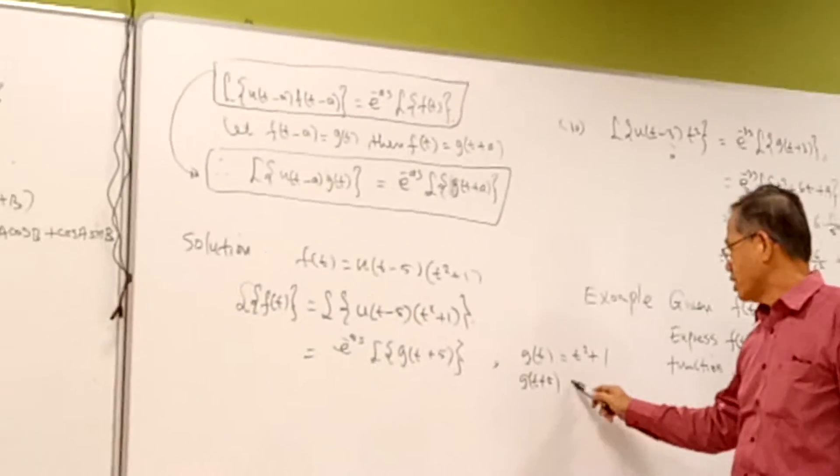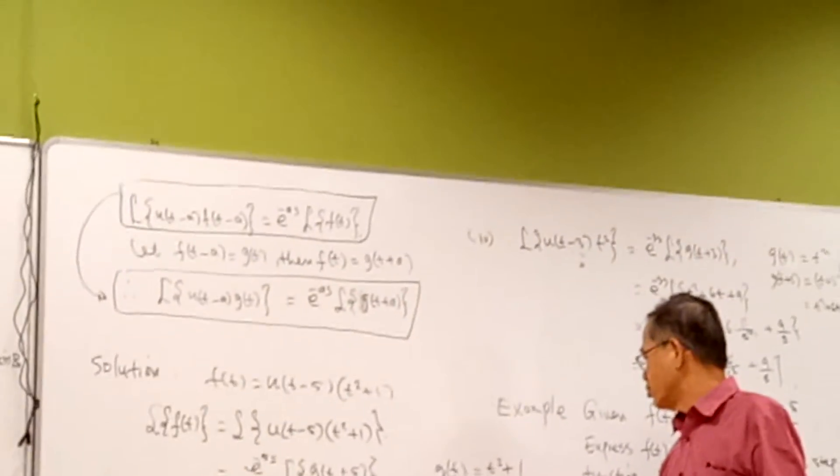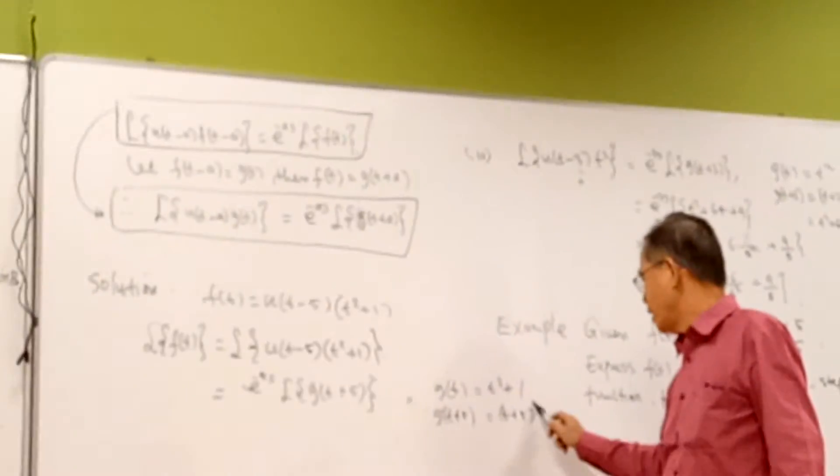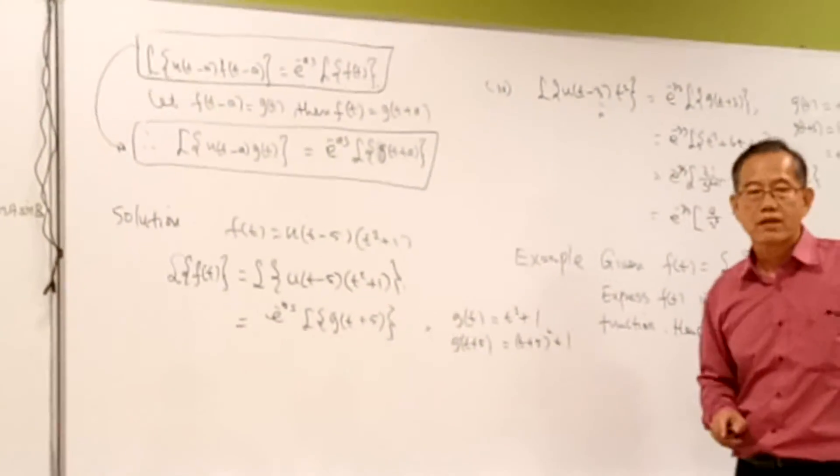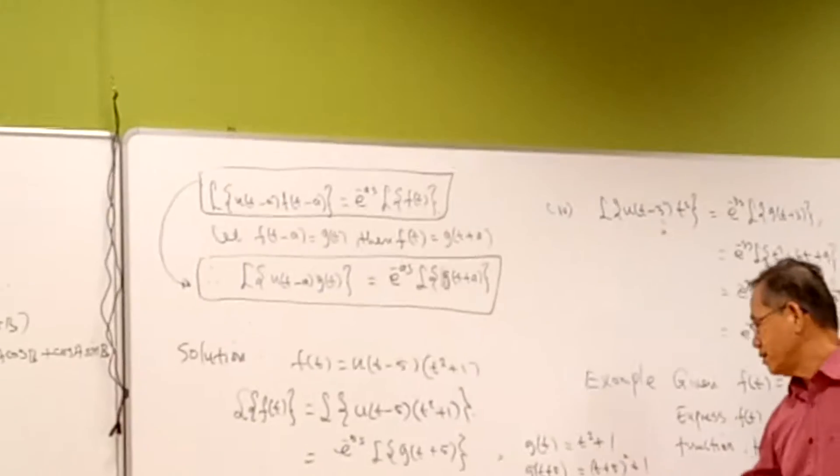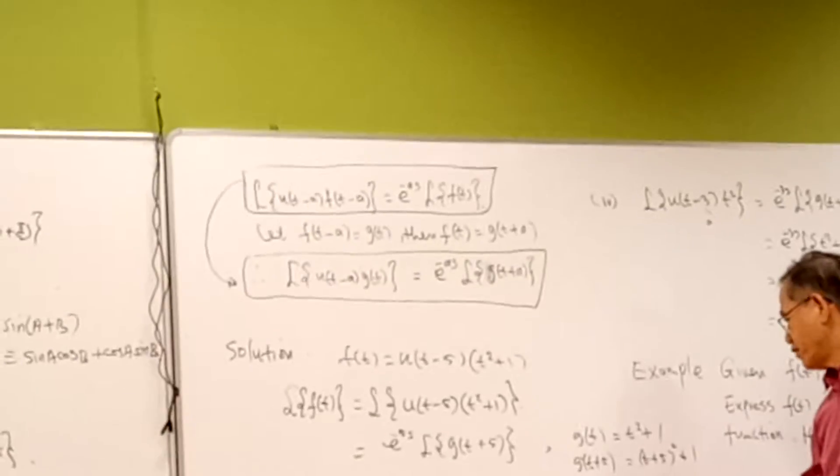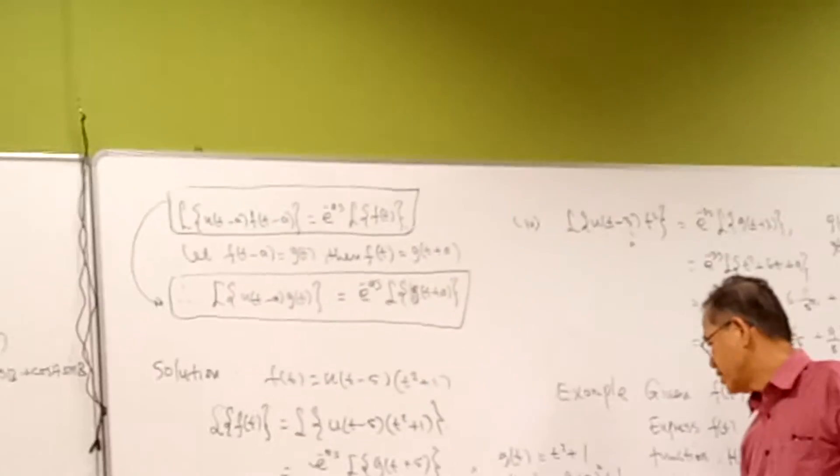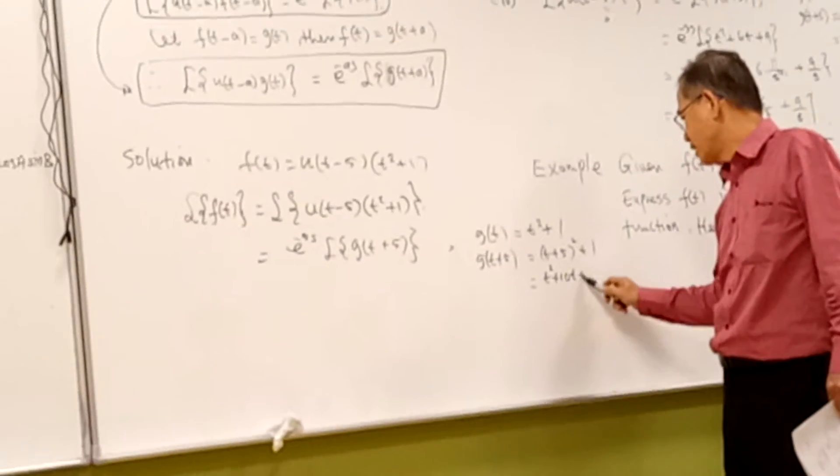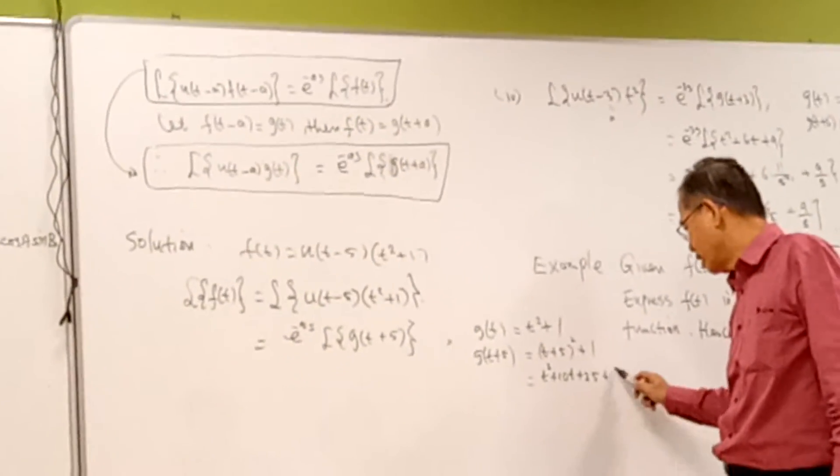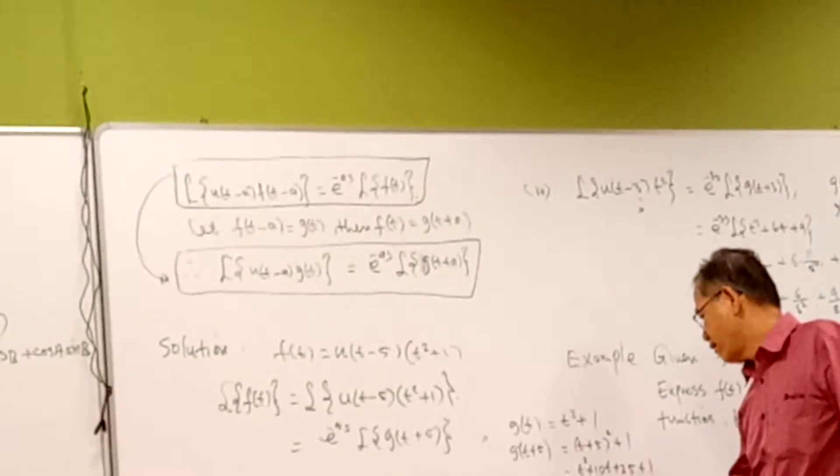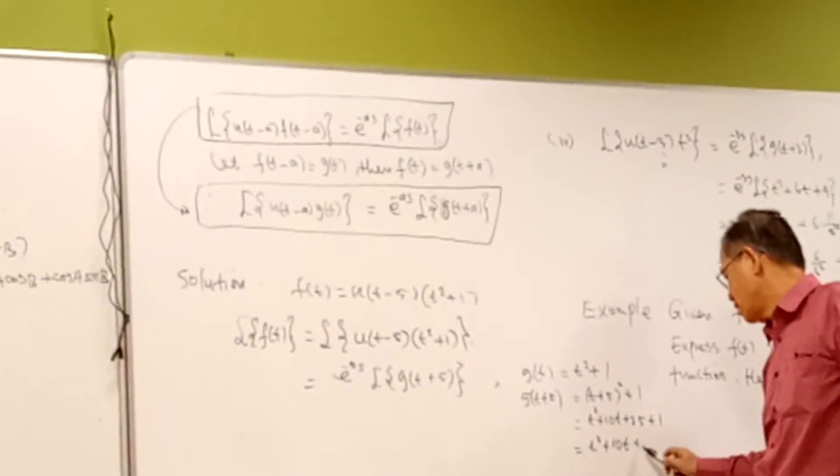Understand? So it's just changing t to (t+5)² + 1. So you expand (t+5)²: it's t² + 10t + 25 + 1, which equals t² + 10t + 26.